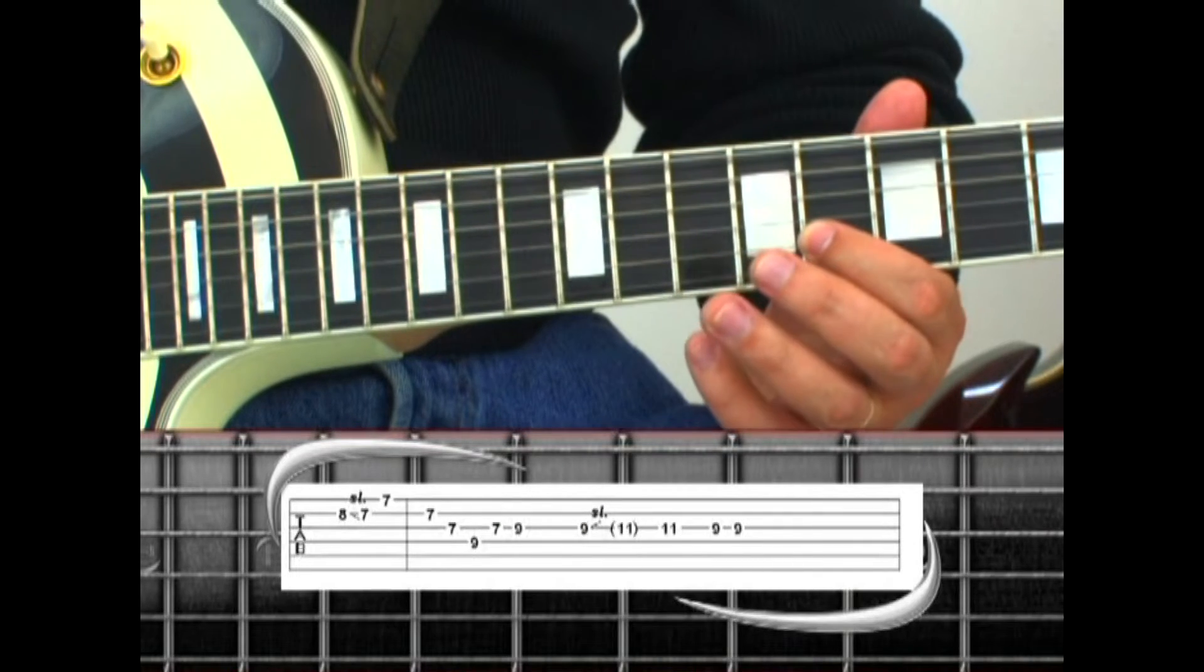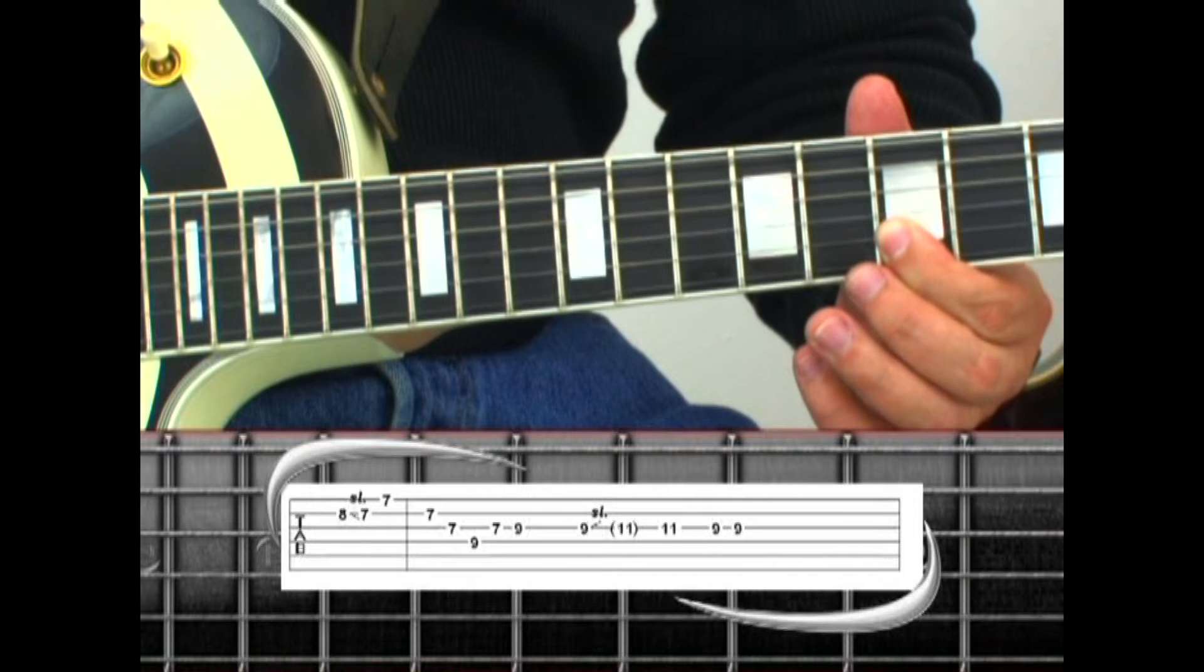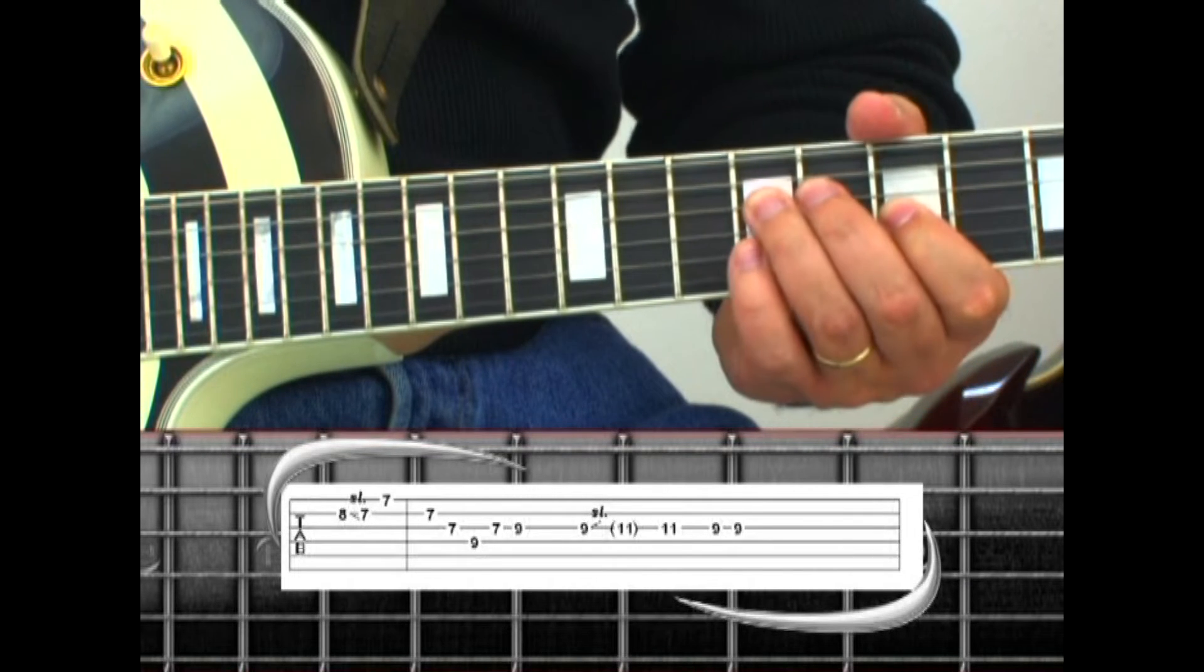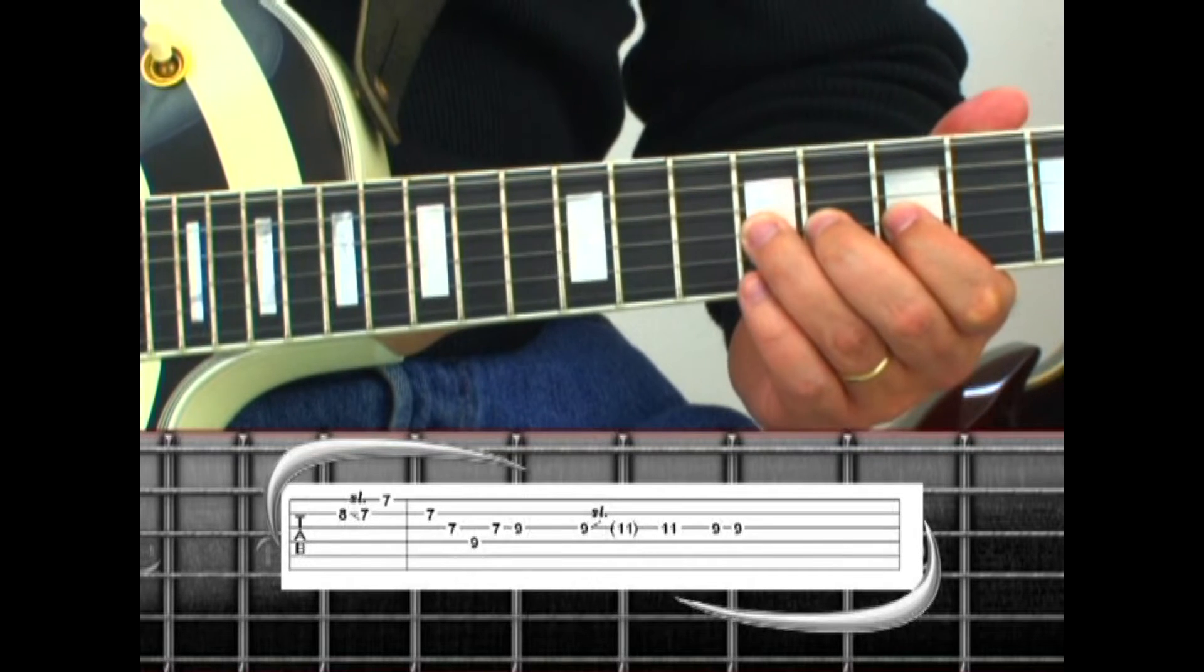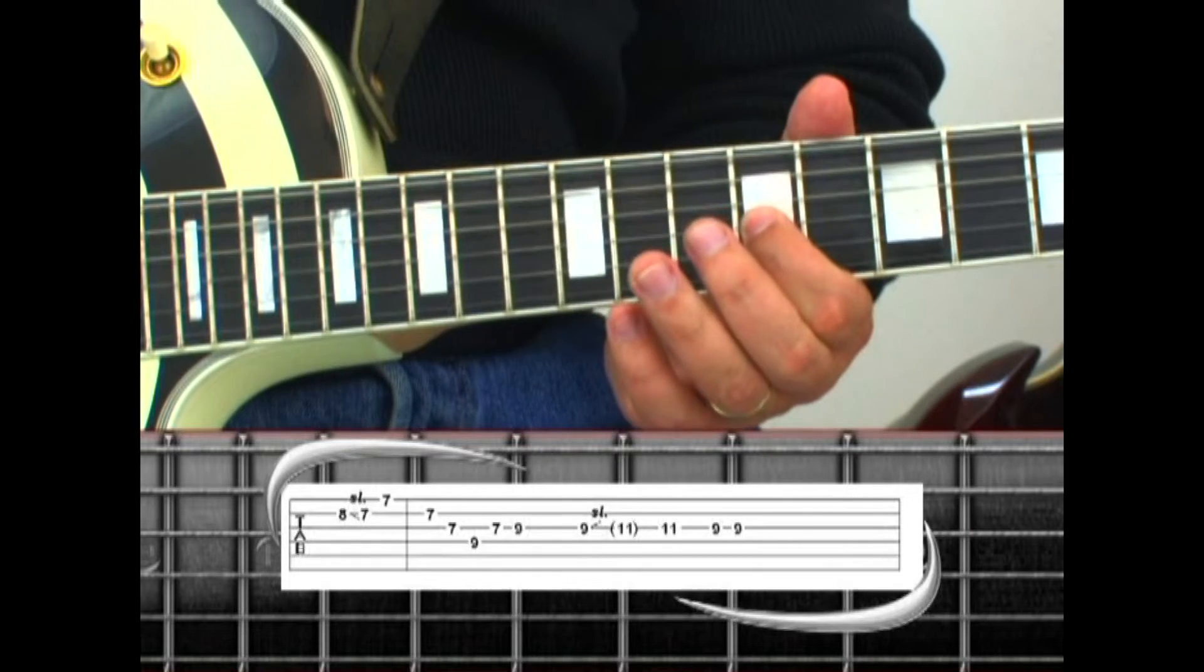Then 8, slide to 7, then 8, slide to 7, end on the 1st string 7, followed by the 2nd string 7, 3rd string 7, 4th string 9, back to 3rd string 7, 9, 9, slide to 11, pick 11, 9, and 9.